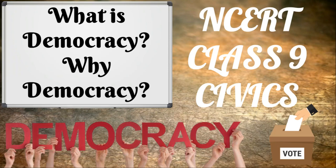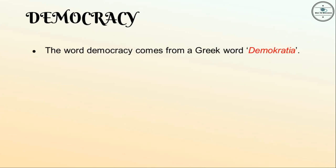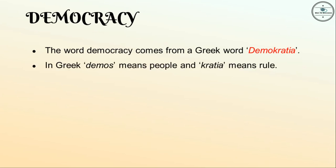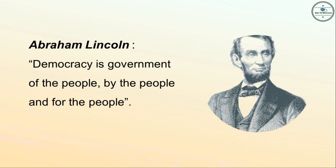Welcome to Way to Success. Let's start with Class 9th Civics chapter that will provide you a clear picture of what is democracy and why we need democracy. The word democracy comes from a Greek word 'demokratia' — in Greek, 'demos' means people and 'kratia' means rule. So democracy is rule by the people. According to Abraham Lincoln, democracy is government of the people, by the people, and for the people.